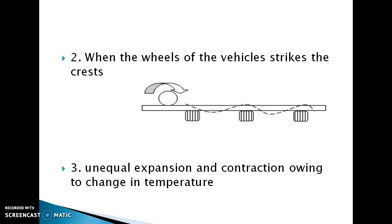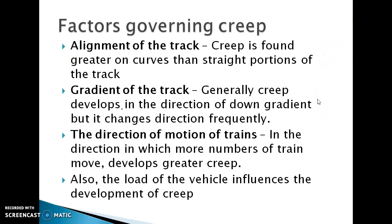The third cause of creep is unequal expansion and contraction due to temperature. The factors governing creep include the alignment of the track — creep is greater on curves than on straight portions — the gradient of the track, where creep generally develops in the direction of down gradient but changes direction frequently, and the direction of motion of trains, where more trains moving in one direction causes more creep.